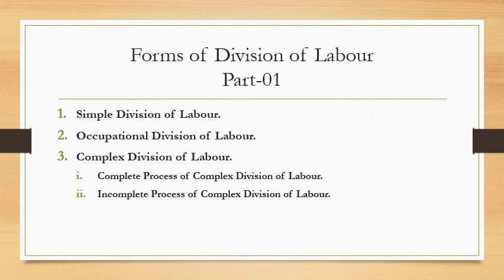Complex division of labor is described as when each man or group of men undertakes a specialized function leading to a final product. For example, in the cycle trade, the manufacture of different parts involves processing of raw material, cutting, welding, electroplating, packing, and dispatching the final goods. Such type of division of labor is called complex division of labor.